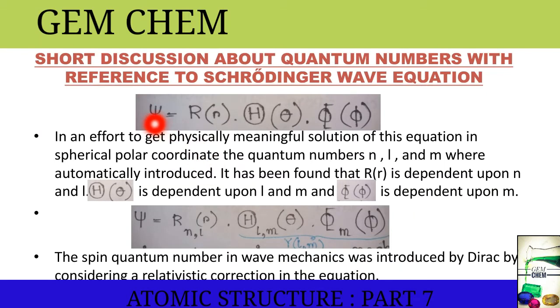Previously, we have obtained these equations from the spherical coordinate. In an effort to get physically meaningful solution of this equation in spherical polar coordinates, the quantum numbers n, l, and m were automatically introduced. It has been found that the Radial Wave Function is dependent upon n and l, whereas the theta function is dependent upon l and m, and phi function is dependent upon m only.